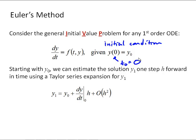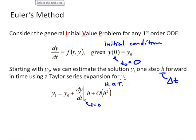Starting with y0, we can estimate the solution one step forward in time. We'll call the step size h, or delta t. Using a Taylor series expansion for y1, we get y1 equal to y0 plus dy/dt evaluated at t equals 0 times h, plus terms of order h squared and higher. Euler's method basically says let's just neglect or truncate the terms second order and higher from the Taylor series.